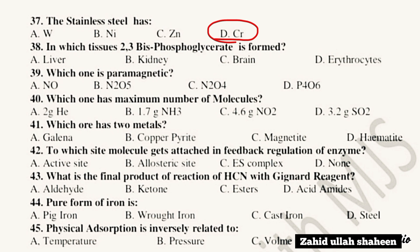Question 37: Stainless steel contains chromium (Cr). Question 38: NH3. Question 39: Which one is ferromagnetic? The answer is ferromagnetic — option D.